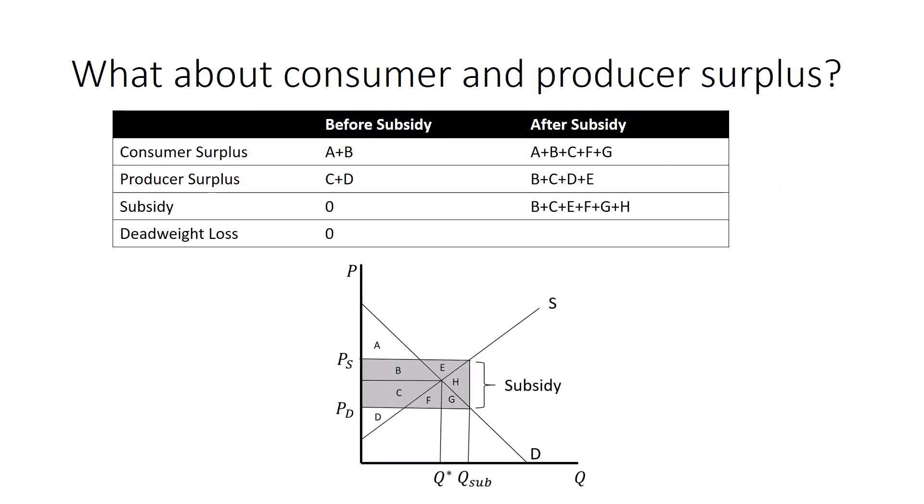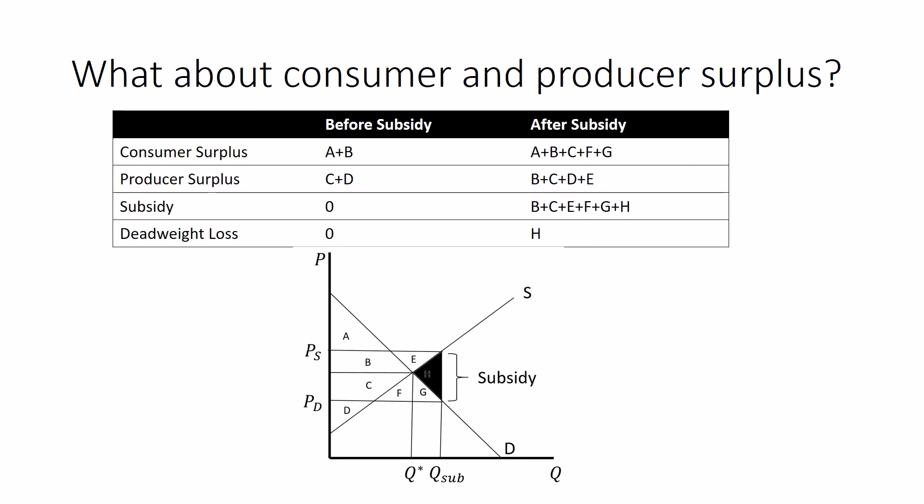So, there is a subsidy happening where it's the subsidy amount in dollars per unit times the number of units. So, it's this whole rectangle, B, C, E, F, G, H. And that's all money we're paying. So, that takes away from our surplus in the market. So, if I subtract that subsidy from my consumer and producer surplus, I get my deadweight loss, which is that area H.